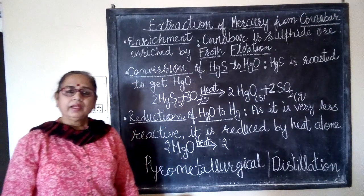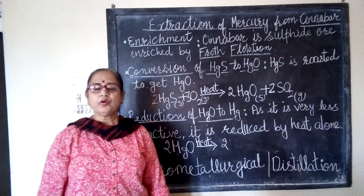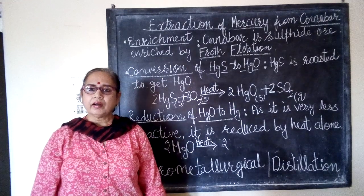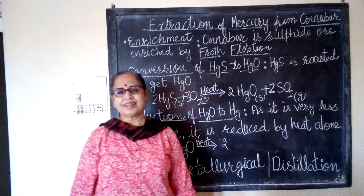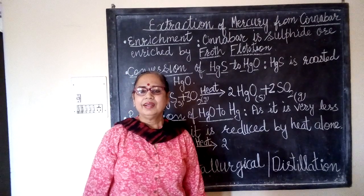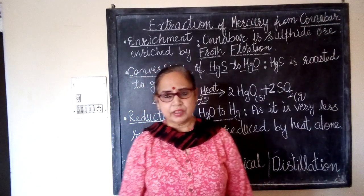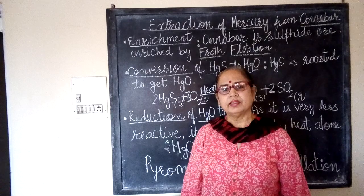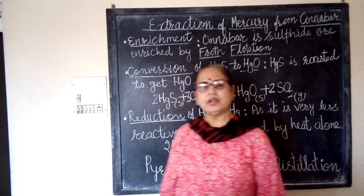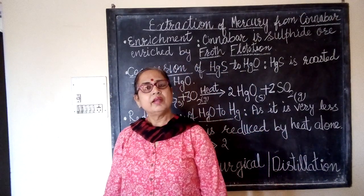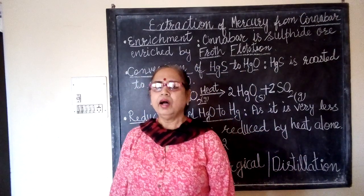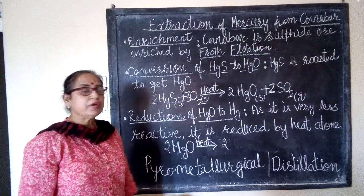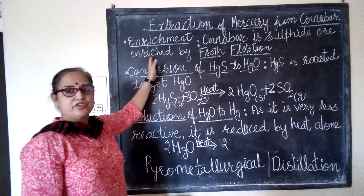As I told you in my previous videos, there are 4 basic steps involved in a metallurgical process. We will be doing the extraction of mercury from cinnabar under these 4 steps. The first step is enrichment.